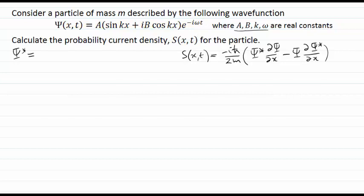We should be able to see that we typically write down a*, but we're told that a, b, k, and ω are real. So we can just write a into the sine of kx, and we're going to change the sign of the i to minus i, b cosine kx. It's important we change the sign every time we see the imaginary unit i. And then this will be e to the plus iωt. So there's my complex conjugate of the wave function.